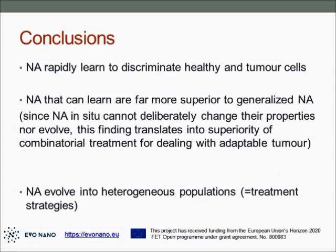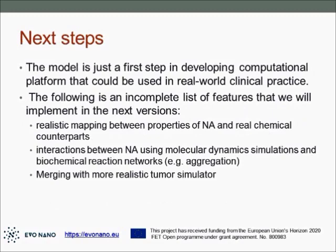In conclusion, in this simulation nano agents can rapidly learn to discriminate healthy and tumor cells, and nano agents that can learn from their environment are far superior to generalized nano agents. Since in reality nano agents cannot deliberately change their properties or evolve, this finding tells us that combinatorial treatment is potentially far more superior when dealing with an adaptable tumor.